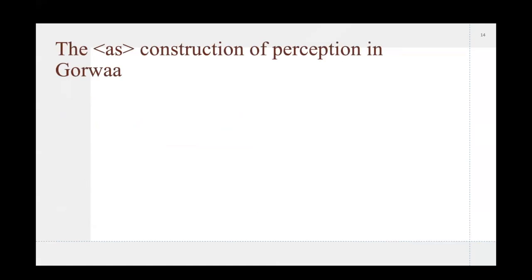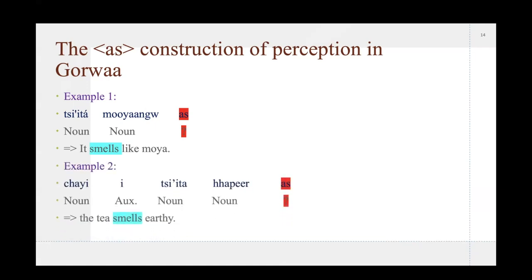The last way that I found that perception is expressed in Gorwaa is the us construction, which Mela touched upon a bit earlier. Or, not the same thing, but the same word, I guess. But, in this case, it was interesting. I have no explanation for it, really. So, I have example one, which was tsi'ita moyang as, and it means, it smells like moya. I'm not sure, really, what it means, like, why it is constructed with as at the end. And the second example was chai'i tsi'ita haper as, so, the tea smells earthy. My preliminary theory about this is that it maybe has to do with smell. When you're trying to ask for things, if something smells like, maybe it'll always be constructed with us. However, I haven't had it come up enough to come to a final conclusion. But, yeah. I just thought it was interesting and worth including.